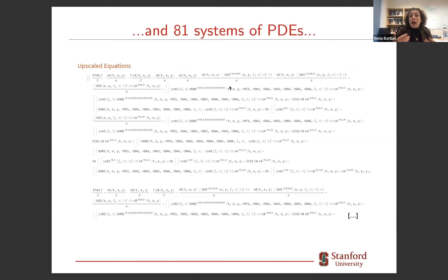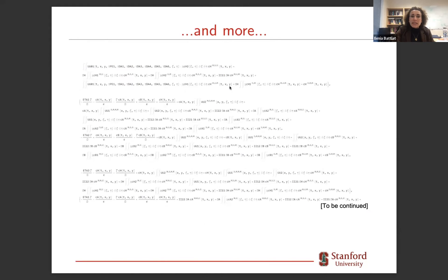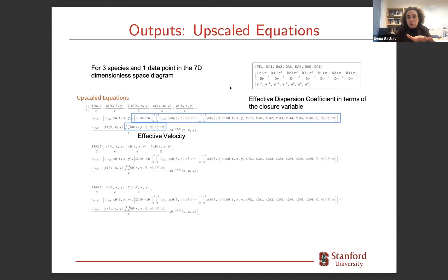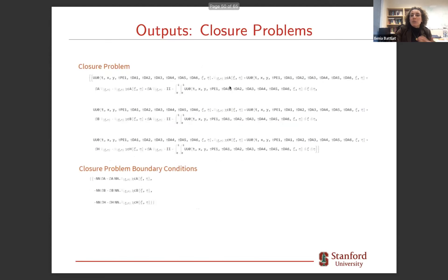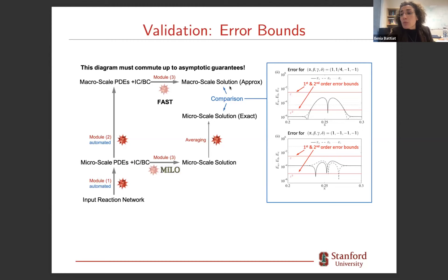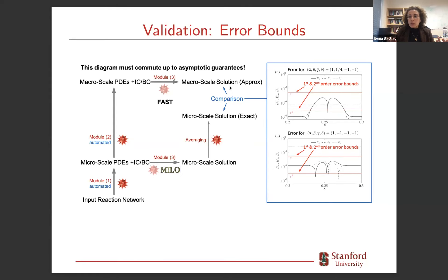The outputs come with a nice interface showing upscaled equations and closure problems. Because homogenization theory is a self-consistent framework, we can verify whether the models Symbolica derives are correct by checking an a priori error bound: we solve the pore-scale problem, average it in space, solve the continuum-scale problem, calculate the difference, and check that the error satisfies the bound prescribed by upscaling theory.